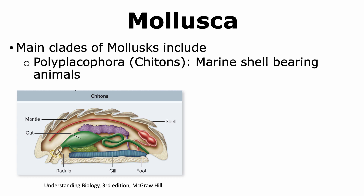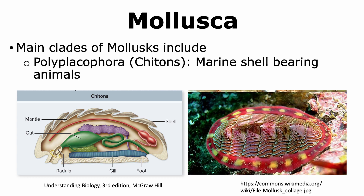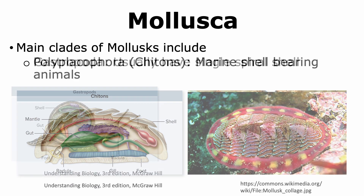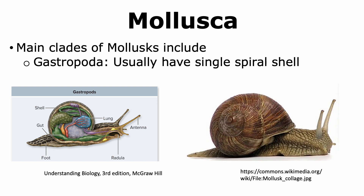Among the major clades of mollusks, Polyplacophora includes organisms called chitons. These are marine shell-bearing animals that attach tightly to substrates through their foot and use their radula to scrape food from rock surfaces. Another major clade is Gastropoda, which includes snails and slugs. Gastropods usually have a single spiral shell and move slowly using their foot. They can be found in a variety of habitats, including the sea, fresh water, and on land.